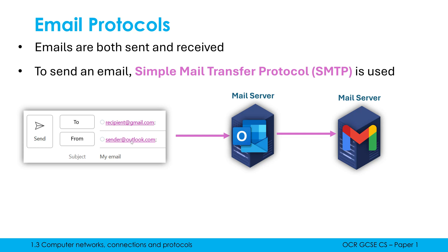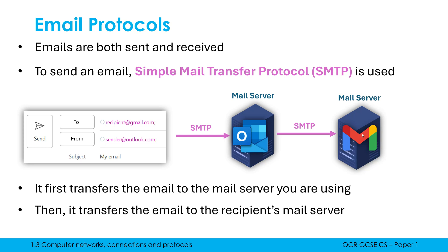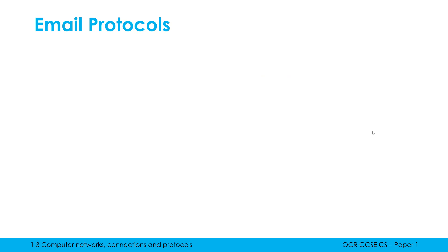My mail server is Outlook, but eventually the email is going to go to Gmail's mail server because that's where my recipient's email is based. SMTP is there to transfer the email from my computer to the mail server — its first job is to transfer it from my computer to my mail server, then it will transfer the email to the recipient's mail server. So Outlook will know the address of Gmail's mail server and SMTP does that second transfer as well. When I click send, it will eventually end up on Gmail's mail server, at which point another protocol needs to take over to actually download it to my recipient's computer.